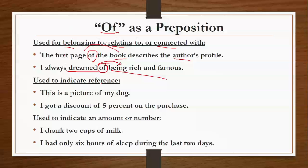Use to indicate reference — जब भी हमें किसी चीज के reference के बारे में बताना होता है, तब भी हम 'of' का use कर सकते हैं। Examples: 'This is a picture of my dog.' और 'I got a discount of 5% on the purchase' — मुझे अपनी purchase पर 5% का discount मिला — तब भी हम 'of' का use करेंगे।